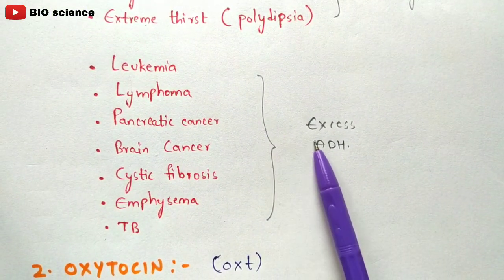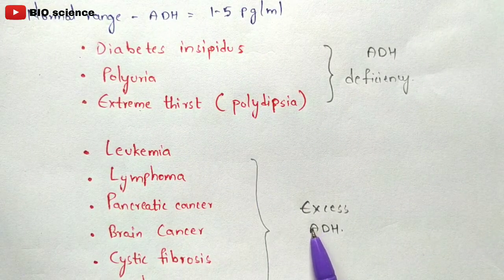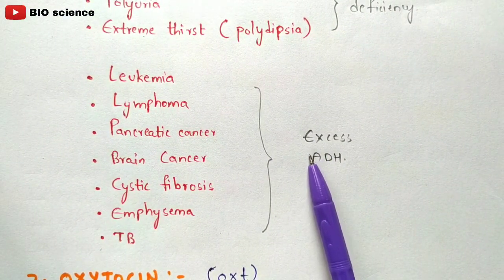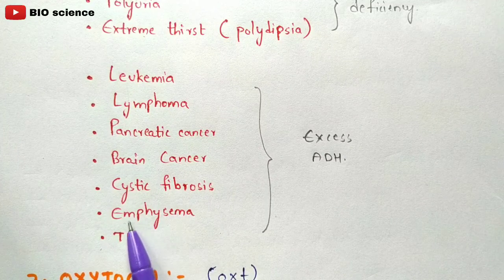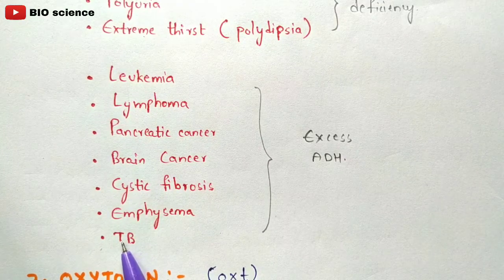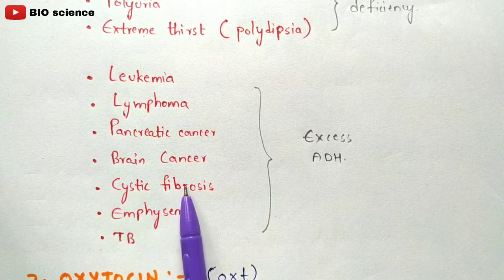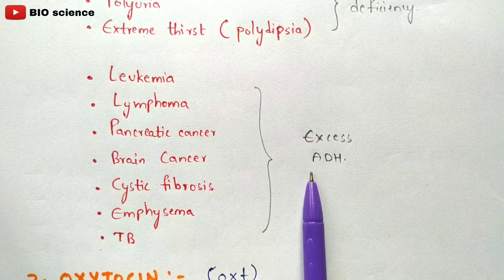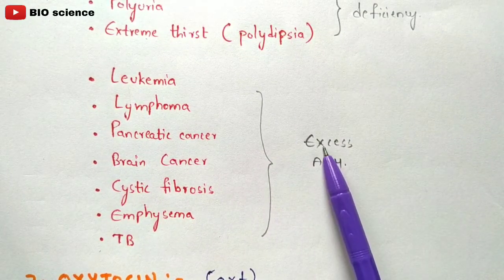If ADH is released above 1 to 5 picograms per ml, more dangerous symptoms can appear, such as leukemia, lymphoma, pancreatic cancer, brain cancer, cystic fibrosis, emphysema, and tuberculosis. Cystic fibrosis is a genetic disorder in which ADH hormone is released in excess.